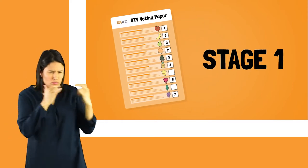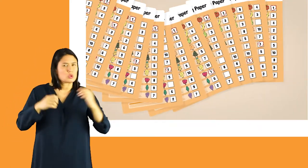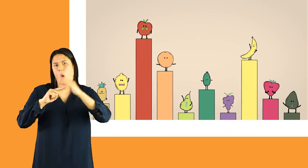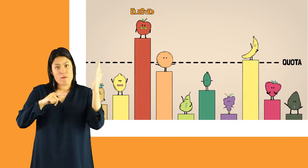In the first stage, all the number one votes are counted. To be elected, candidates must reach a set amount of votes, called the quota.